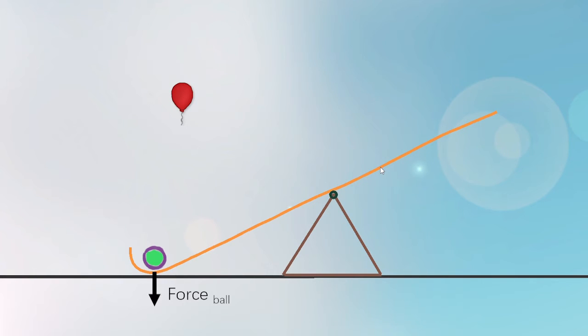The ball is being acted on by gravity and applies a downward force on the lever at a distance from the fulcrum. To lift the ball, we must overcome the torque it applies to the lever.